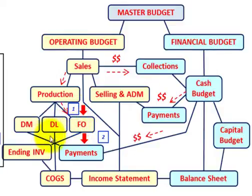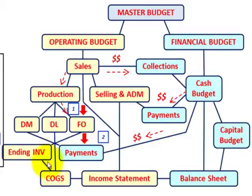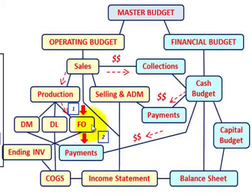Knowing our direct materials, direct labor, and factory overhead budget, we can determine our ending inventory budget. Based on our sales and ending inventory costs, we can determine our cost of goods sold, which then flows into the income statement budget. So what we're going to be looking at is this factory overhead budget and how we calculate it.